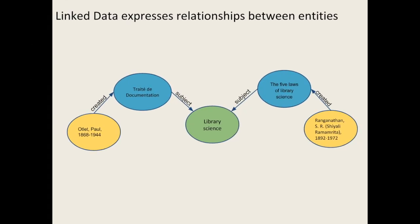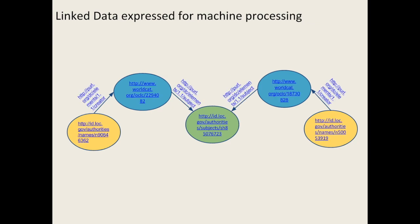Let's use some simple bibliographic information as an example to explore linked data concepts. Here we see that Paul Otlet created the Traité de Documentation, and S.R. Ranganathan created the Five Laws of Library Science. Each of these works is about library science. As librarians, we are familiar with this structure. We are used to adding name and subject authorities in our records. But linked data takes it a step further by encoding those relationships through stable hyperlinks, known as Uniform Resource Identifiers, or URIs.